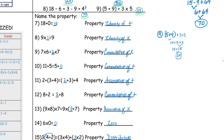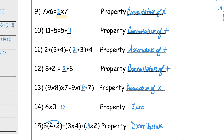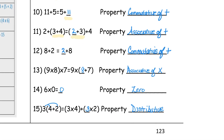Here are the answers to the properties. Number 7 is the identity property of addition — any number plus 0 is that number. Number 9, the identity property of multiplication — any number times 1 is that number. For number 9, it's the commutative property; notice the properties change order. Number 10, it's the commutative property of addition — the numbers change order, or they commute, they go back and forth. Number 11 is the associative property of addition — notice the groups hang out differently. All of the numbers are the same, but they hang out differently before you solve each problem, but the answer would still be the same.